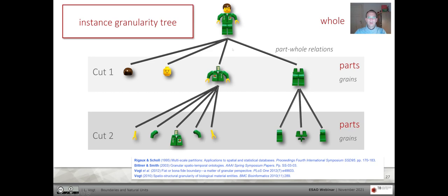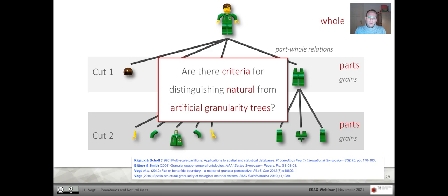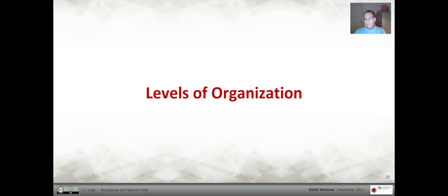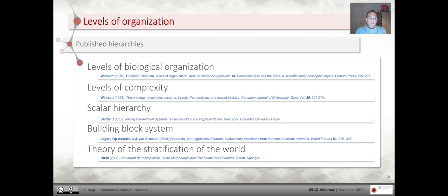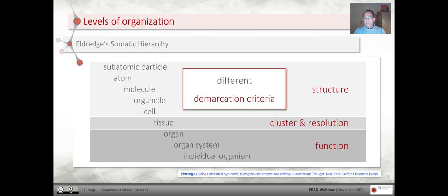Regarding these two types of partitions — region-based and object-based — the question is: are there criteria for distinguishing natural from artificial granularity trees? These questions have been addressed before, and there are many publications about levels of organization or hierarchical schemata trying to provide such a system for all material entities. One prominent example is the Eldridge somatic hierarchy, where different demarcation criteria have been applied — that's typical for these level schemata.